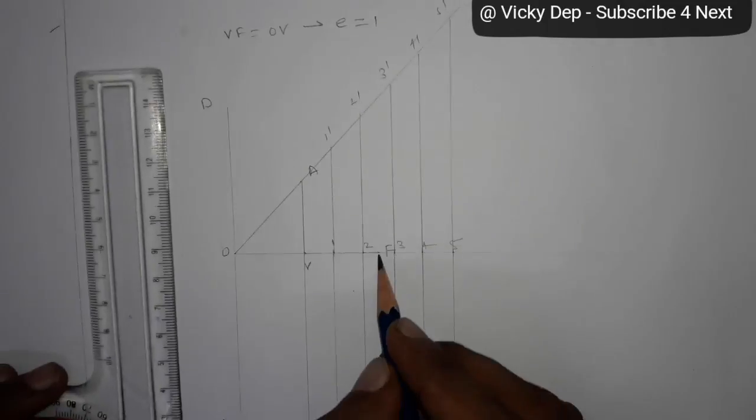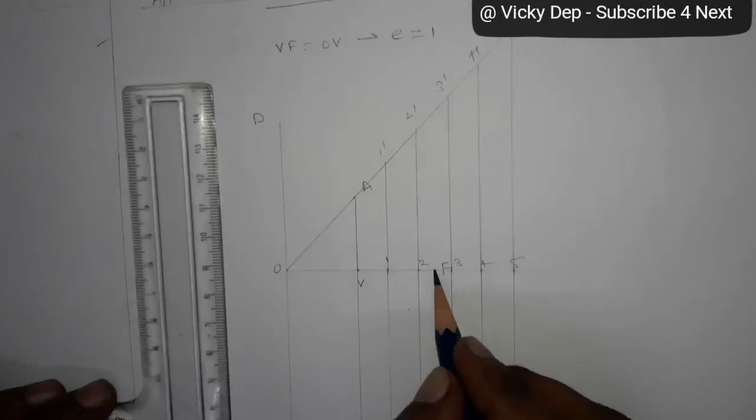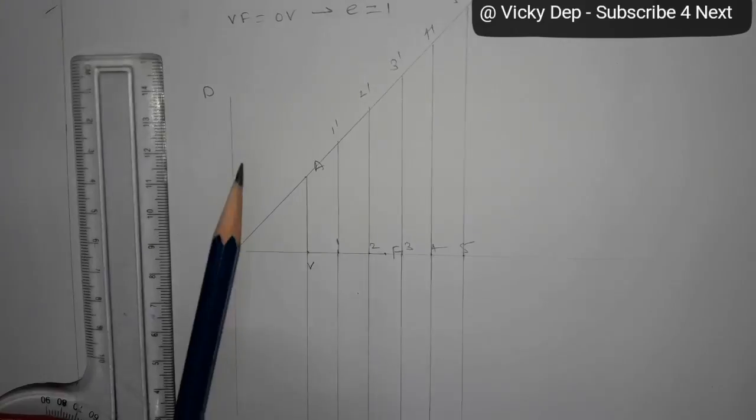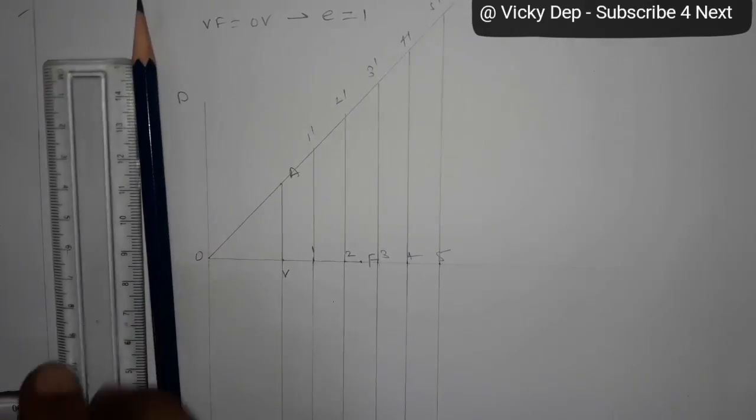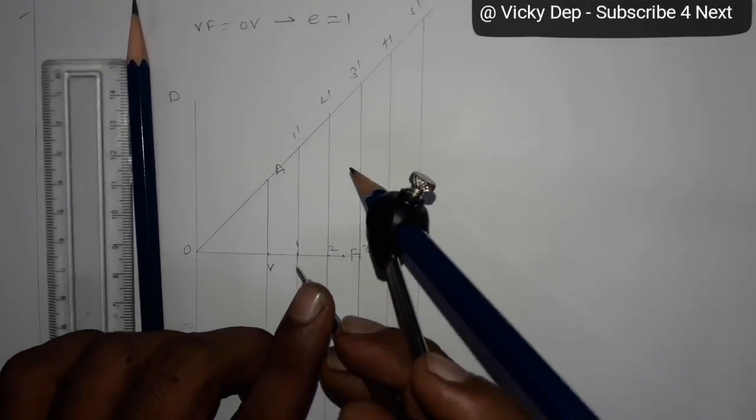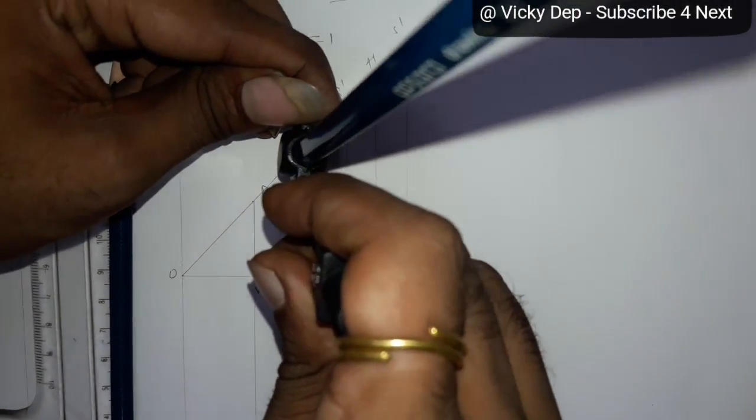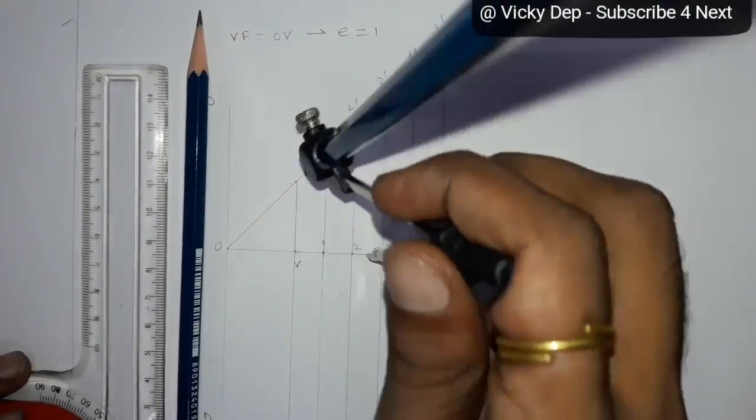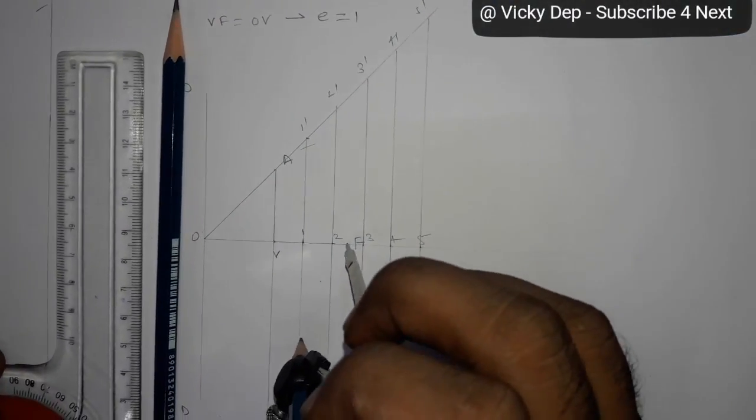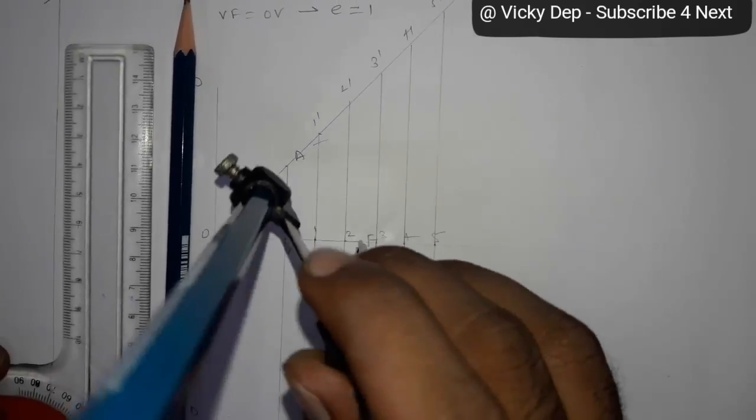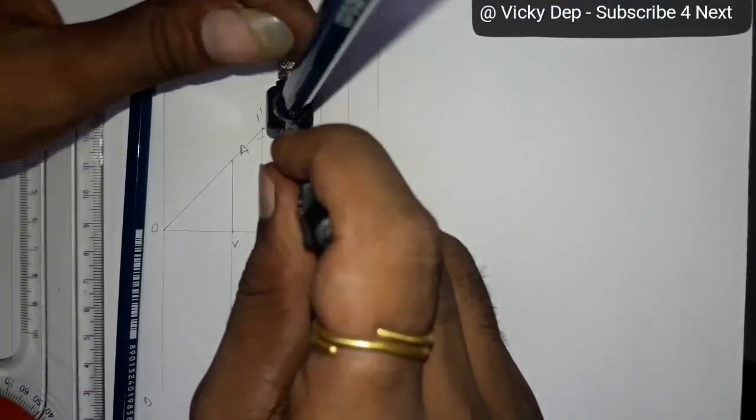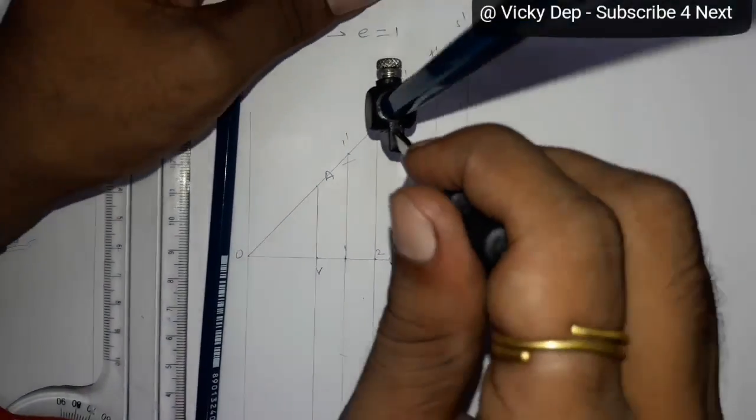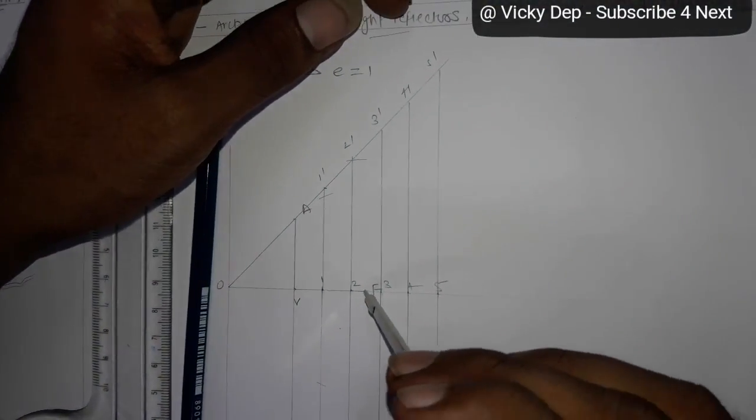Now this F point is important. In compass, you have to take the radius 1 to 1 dash. I am repeating, 1 to 1 dash, and center point F. Mark point on 1 to 1 dash line, upside and downside. Similarly, 2 to 2 dash, take the center point F again, mark 2 points upside and downside on the same line.